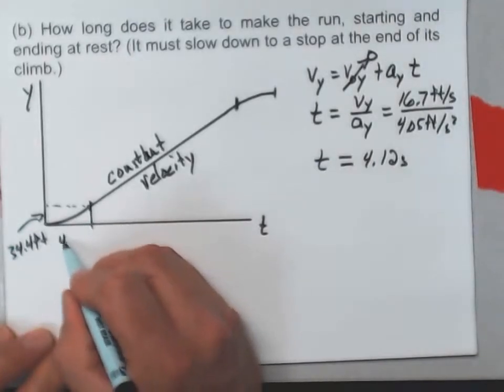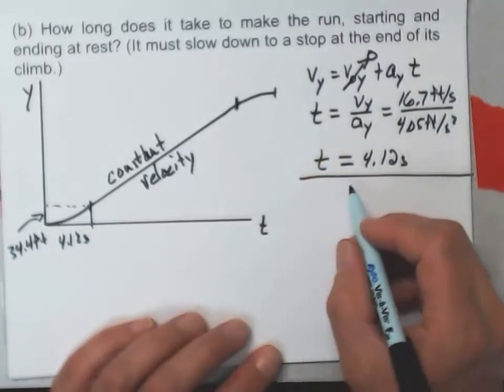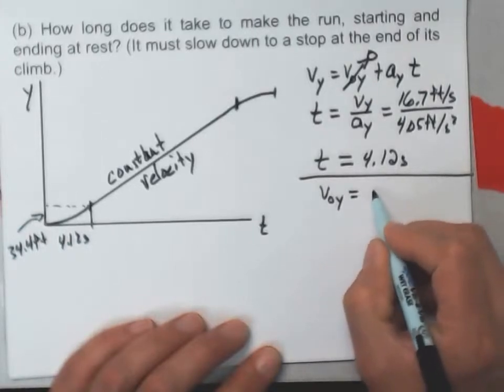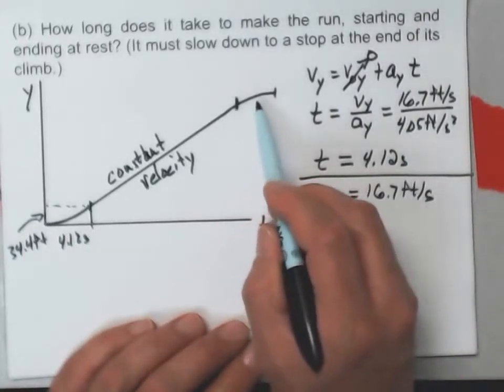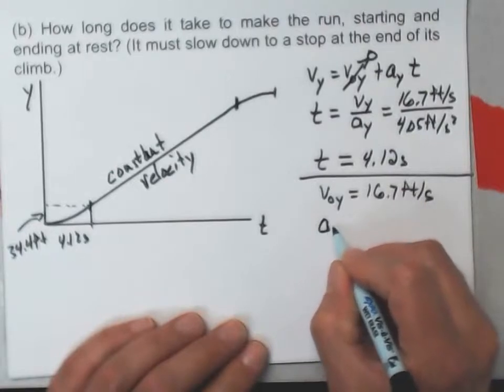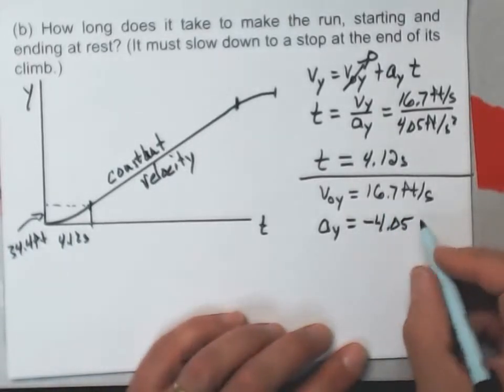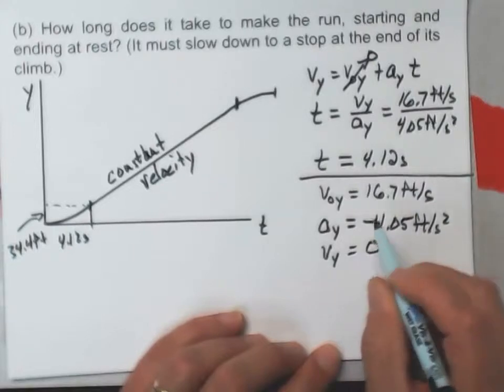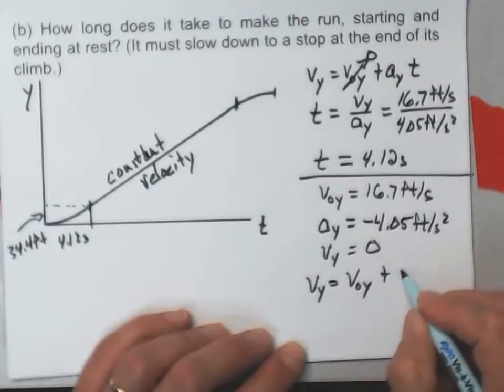So I know that this time interval lasts 4.12 seconds. At the end of the motion, right here at the beginning of this interval, I'll have its initial speed is going to be that 16.7 feet per second. The elevator is slowing down with that same acceleration that it had at the beginning. And so a sub y is going to be negative 4.05, the same magnitude of acceleration it had at the beginning. And at the end of this interval, v sub y is going to be zero.